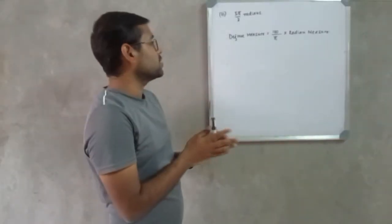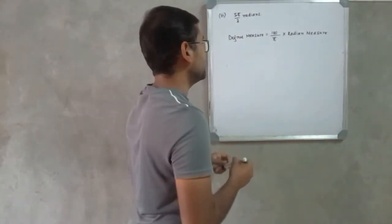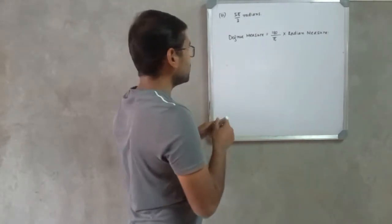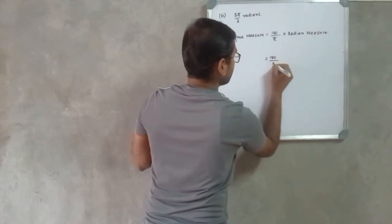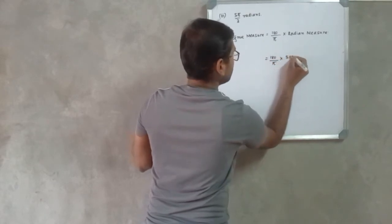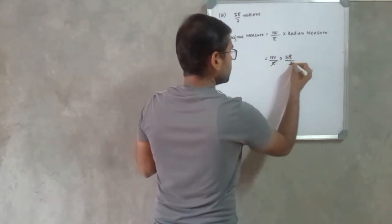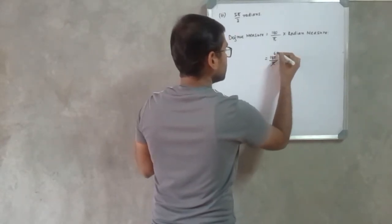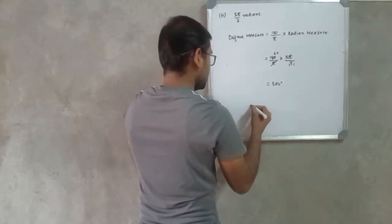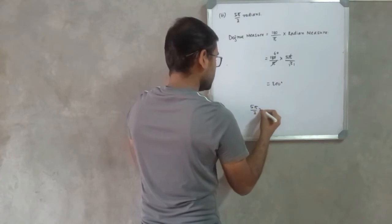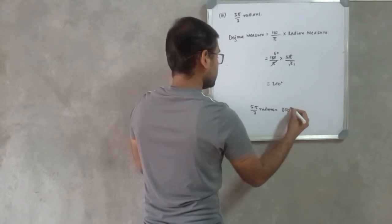Next we have 5π/3 radians and we need to convert this into degree measure. Using the same formula and substituting the radian measure of 5π/3, the π values cancel, and 180/3 × 5 = 300. So, 5π/3 radians = 300 degrees.